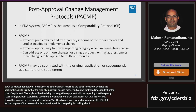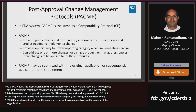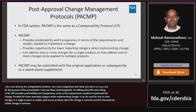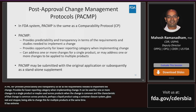A PACMP provides predictability and transparency in terms of the requirements and studies needed to implement a change, and if those requirements are met and studies are conducted as expected, it provides the opportunity for a lower reporting category when implementing the change. A PACMP can be utilized for one or more changes to a single product or used across products when the change is common across them — for example, a container closure system change for multiple simple liquid formulation injectable products using the same protocol. A PACMP has extreme flexibility in when it can be proposed and can be submitted with the original application or subsequently as a standalone supplement.